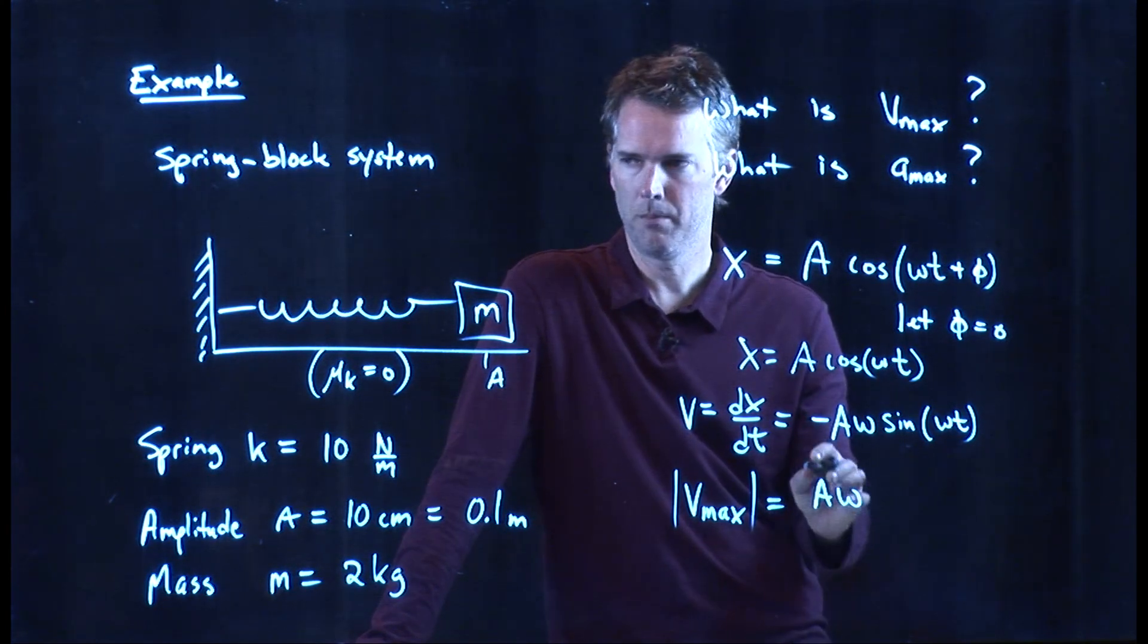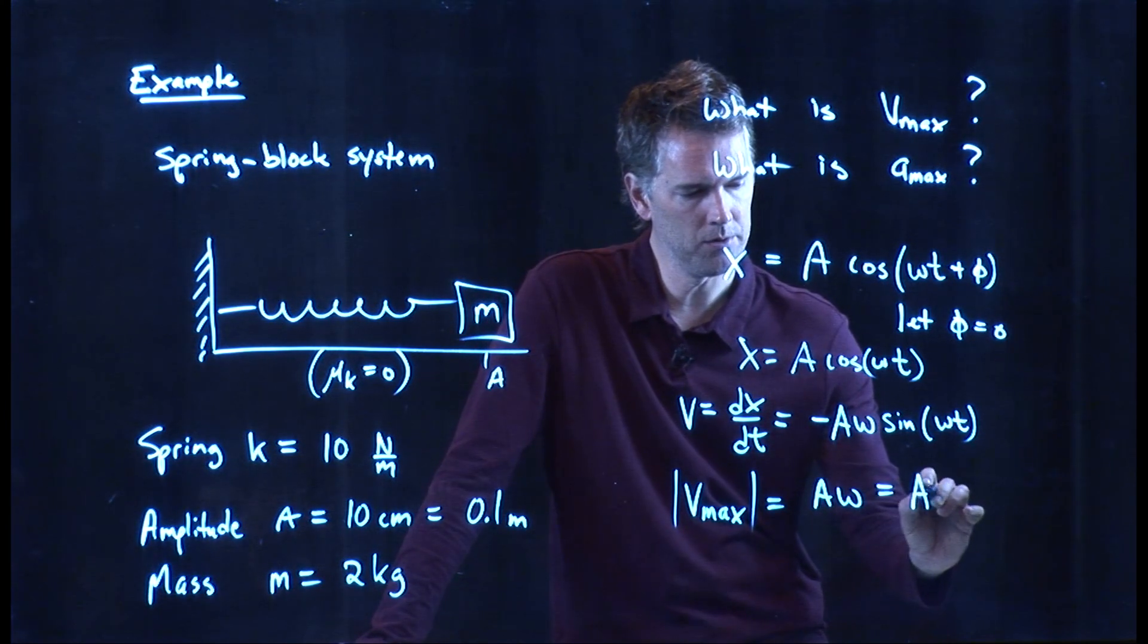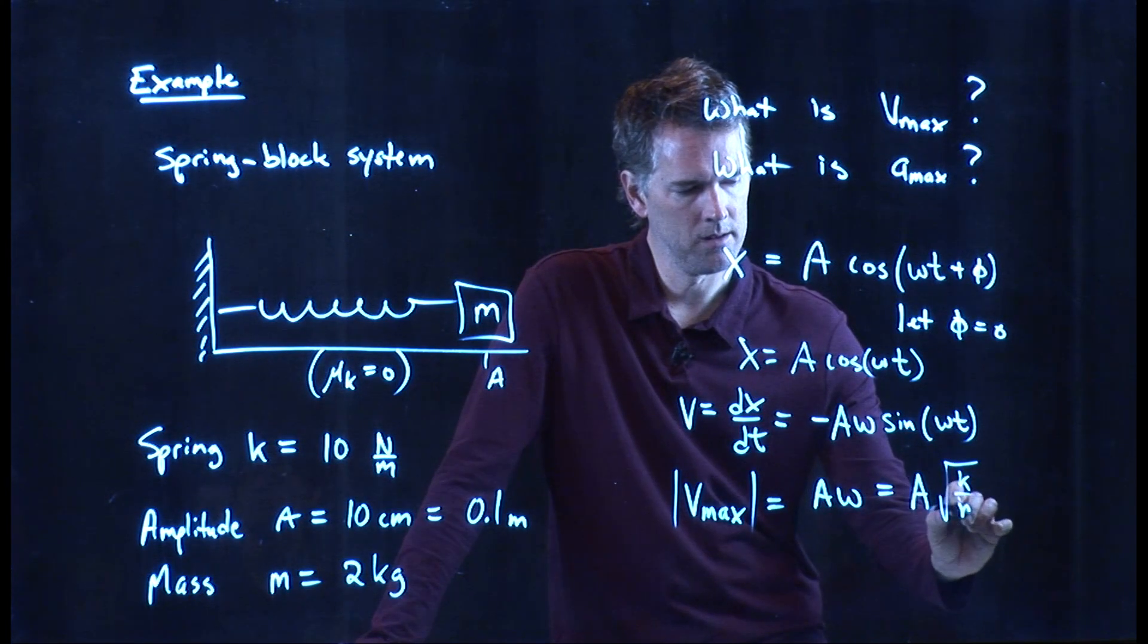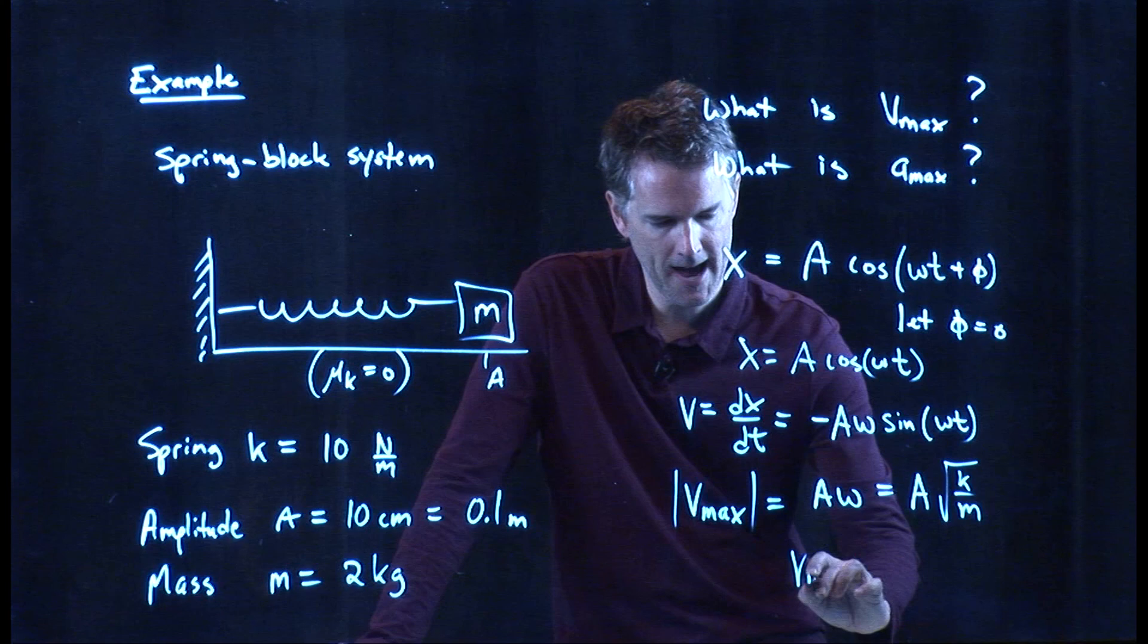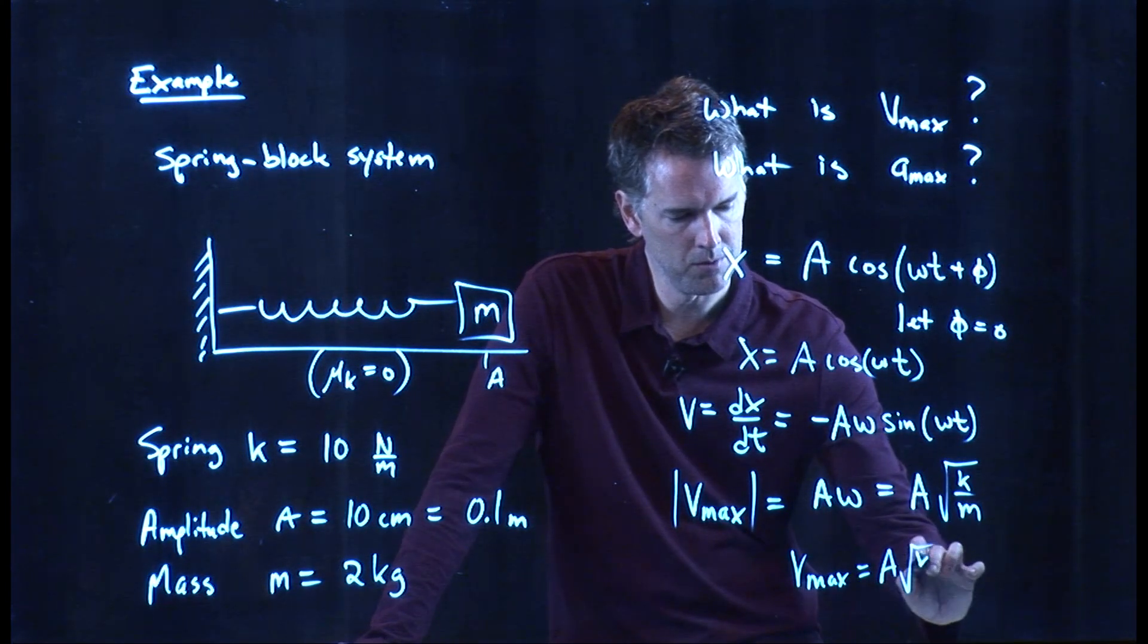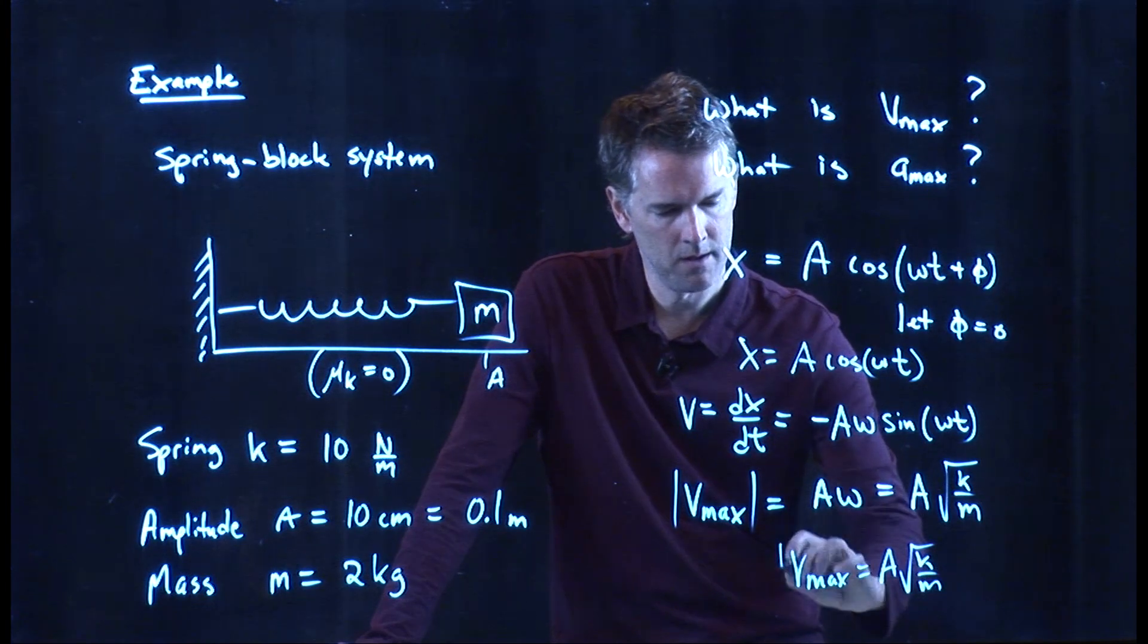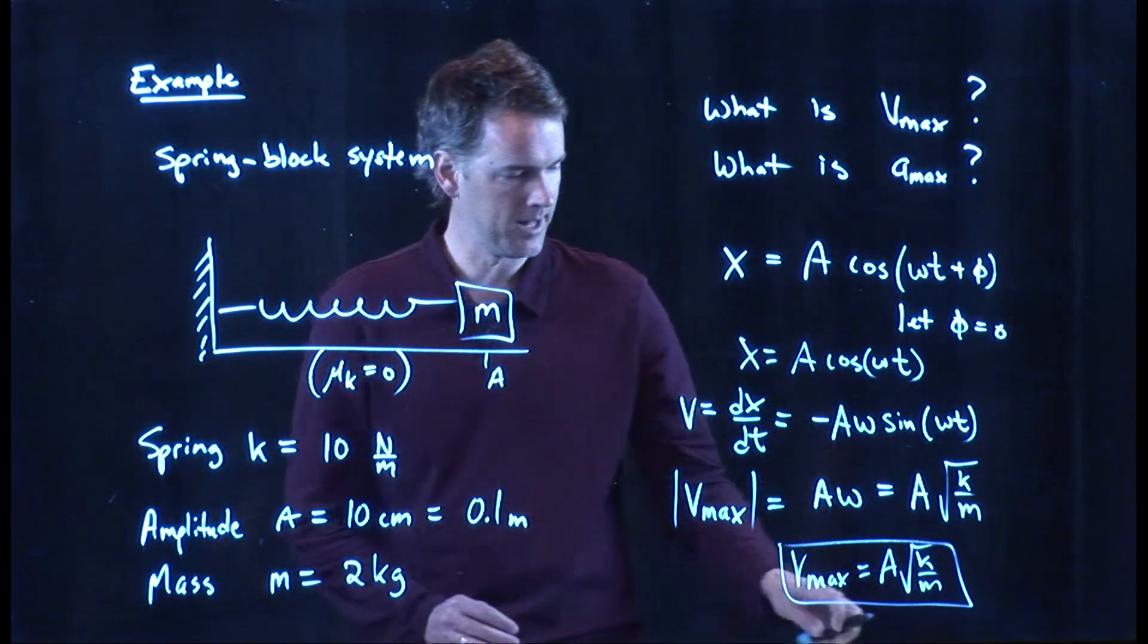But we know what omega is. Omega is the square root of k over m. And so, we in fact have v max. It's A square root k over m. And now we can plug in some numbers and figure out exactly what that is.